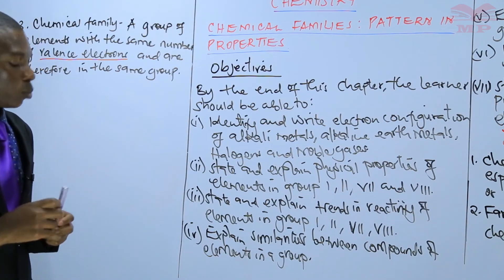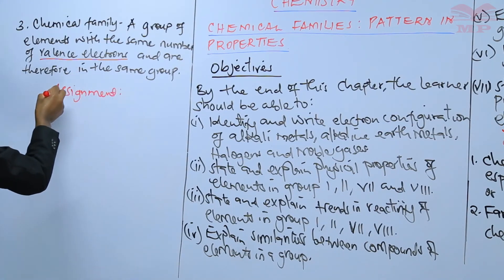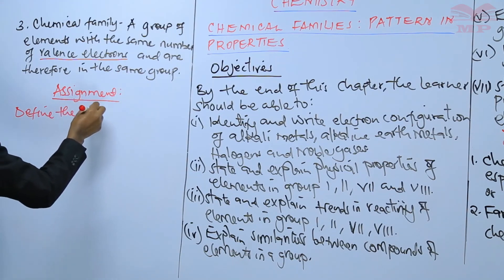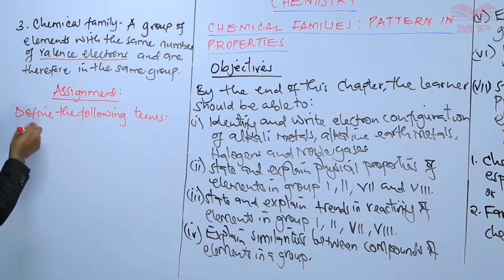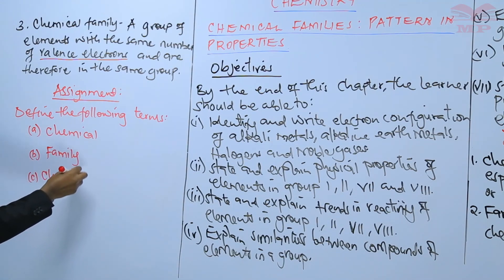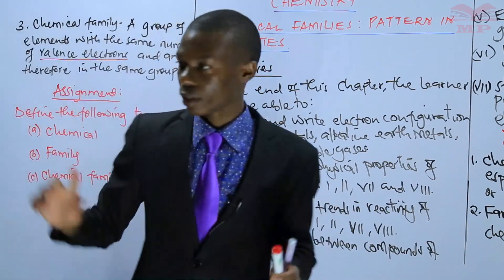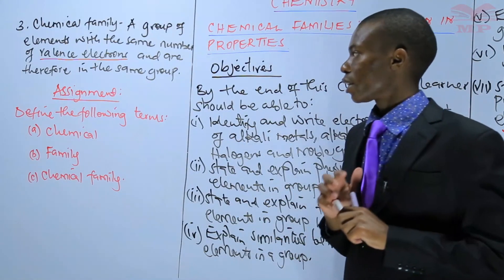Before we end, I need to give you an assignment. The question is: define the following terms — A, chemical; B, family; C, chemical family. Ensure that you have done that assignment before we meet in the next lesson.